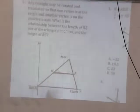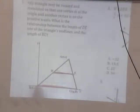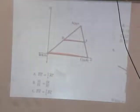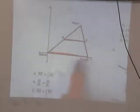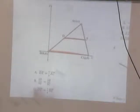Okay, any triangle may be rotated and translated so that one vertex is at the origin and another vertex is on the positive x-axis. What is the relationship between the length of DE, one of the triangle's midlines, and the length of BC? So this is multiple choice. They want to know the relationship between this line, this is the midline, and this line here. Somebody tell about C. DE is half of BC. So if you take BC, cut it in half, it'd be the same length as DE. Are you okay with that? Any questions on number one?